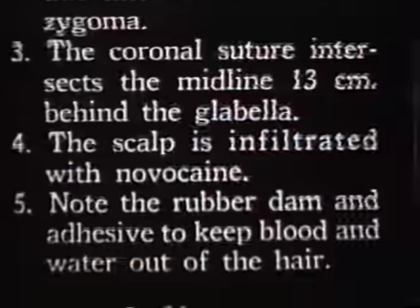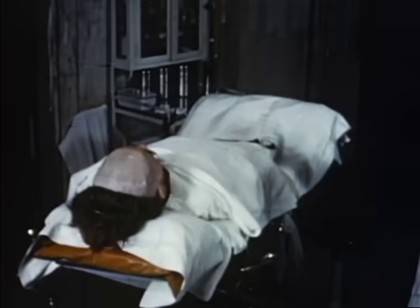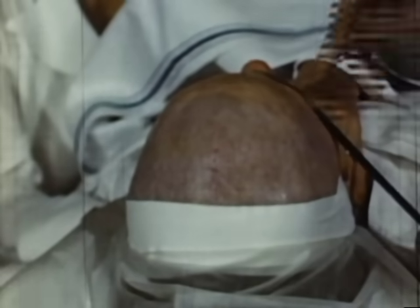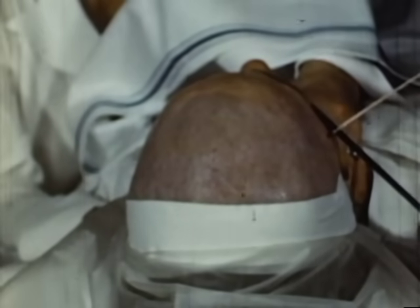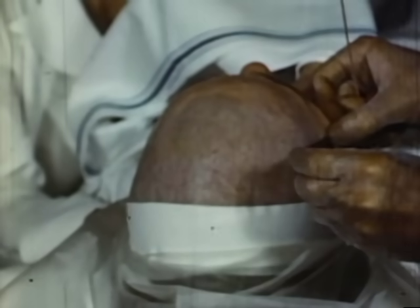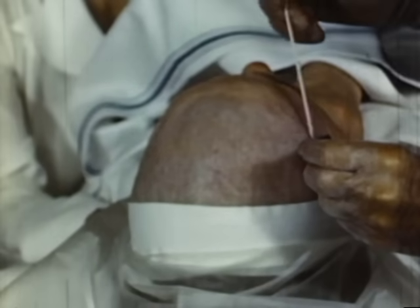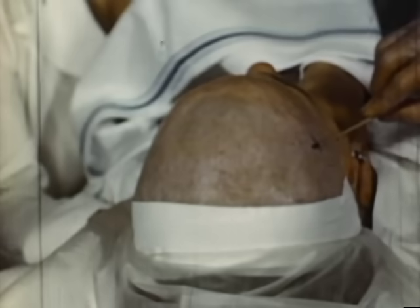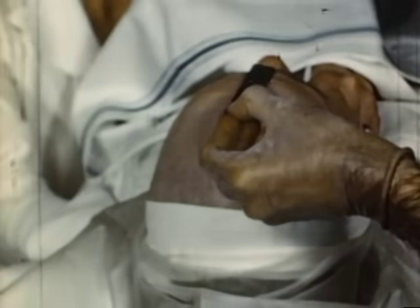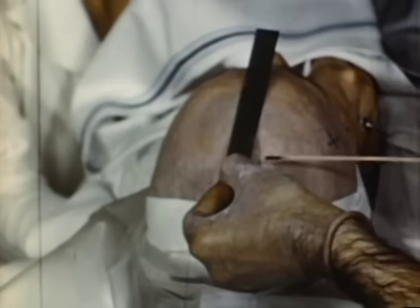The patient is lying on the table with his head shaved back as far as the vertex. The first mark is made three centimeters behind the lateral rim of the orbit, and then a cross mark is made six centimeters above the zygoma. Another mark is made in the midline, 13 centimeters from the glabella.